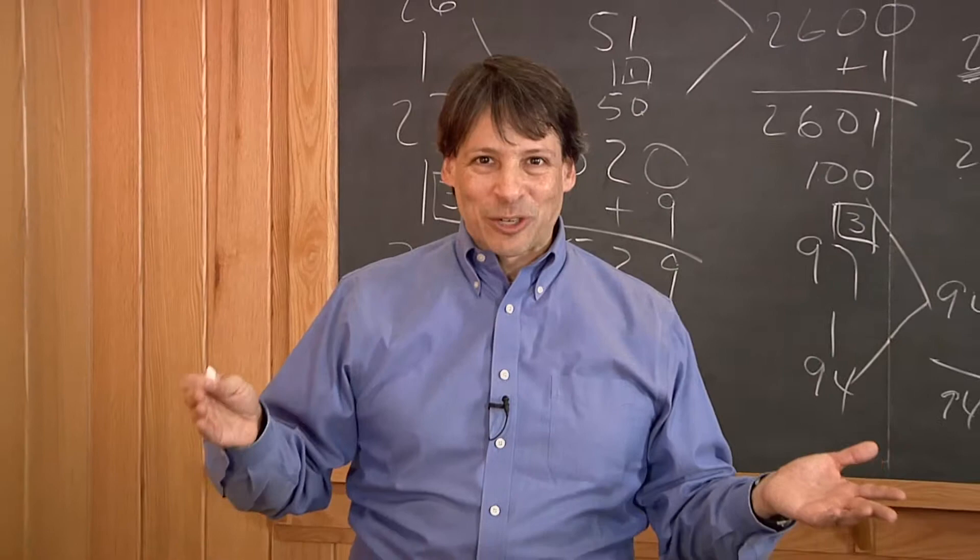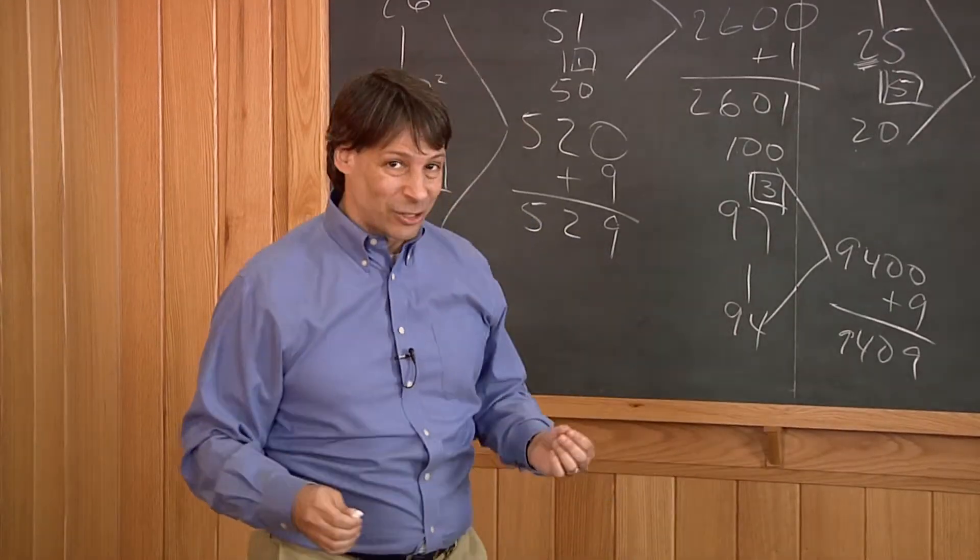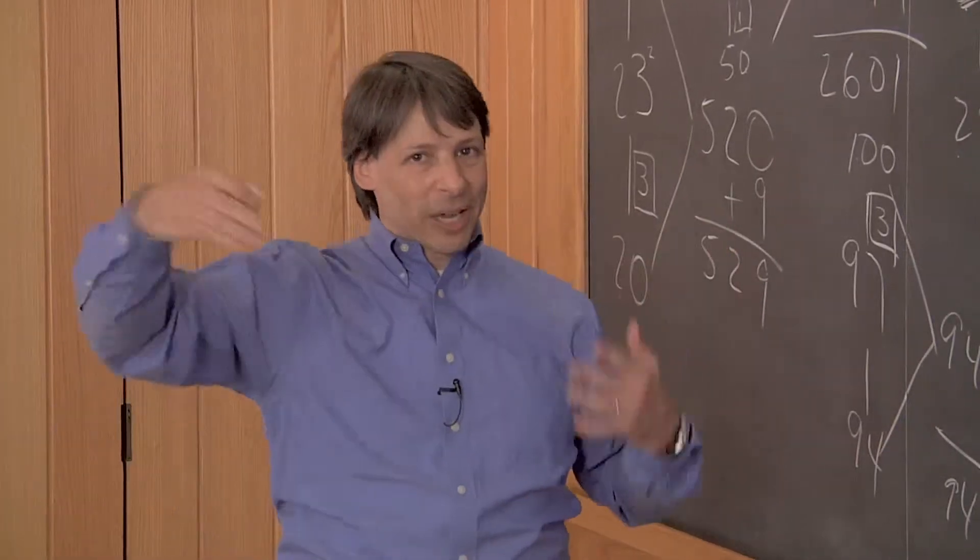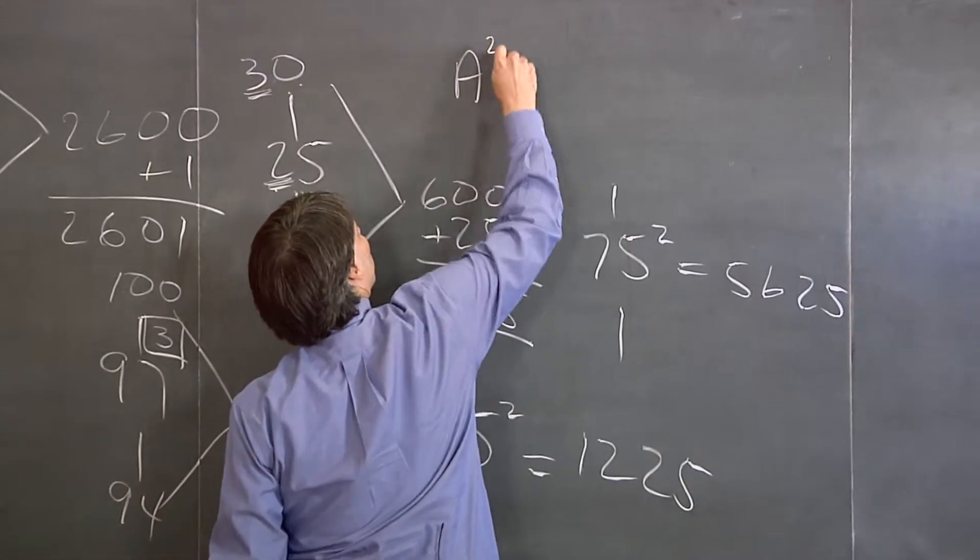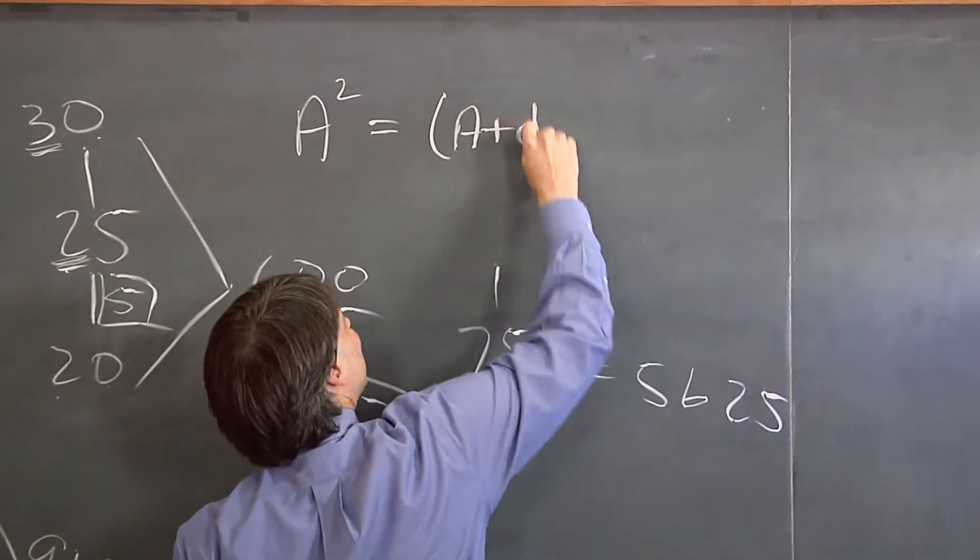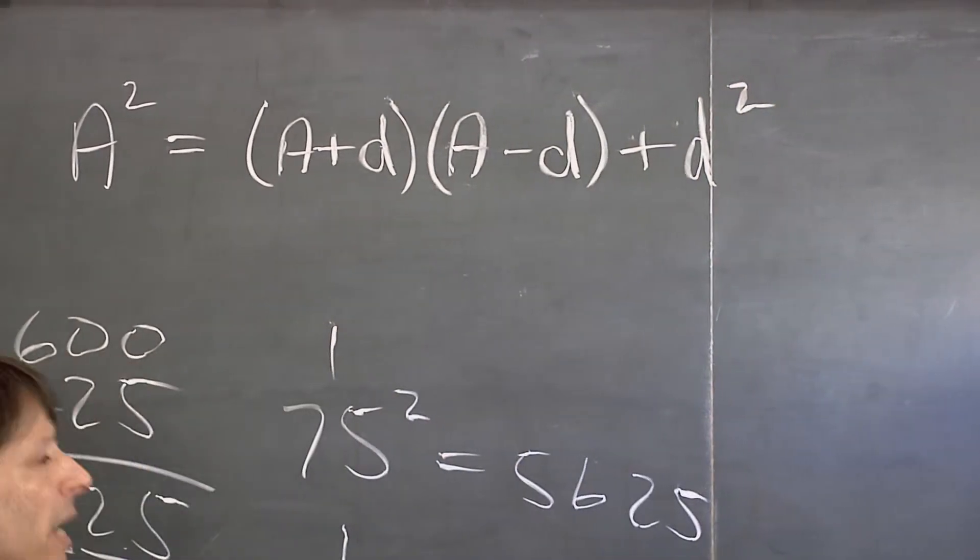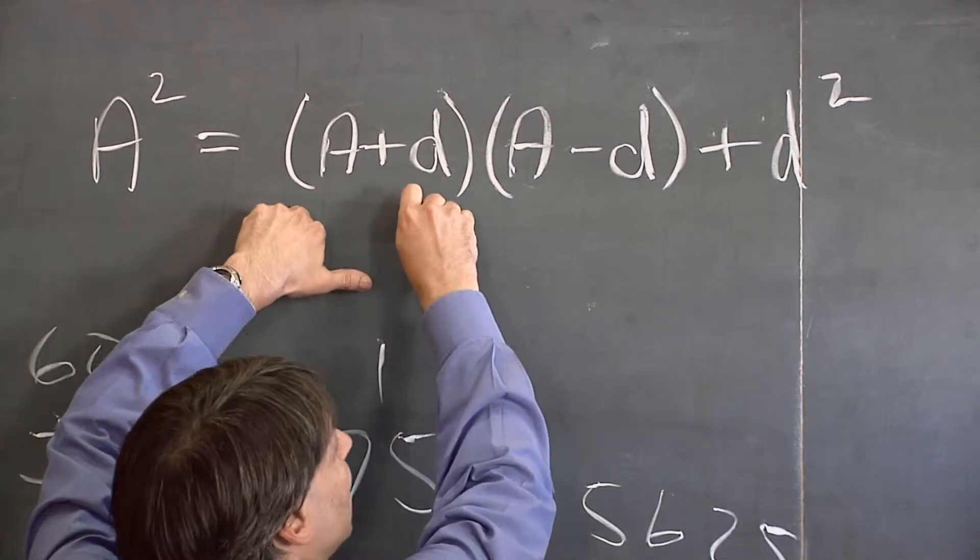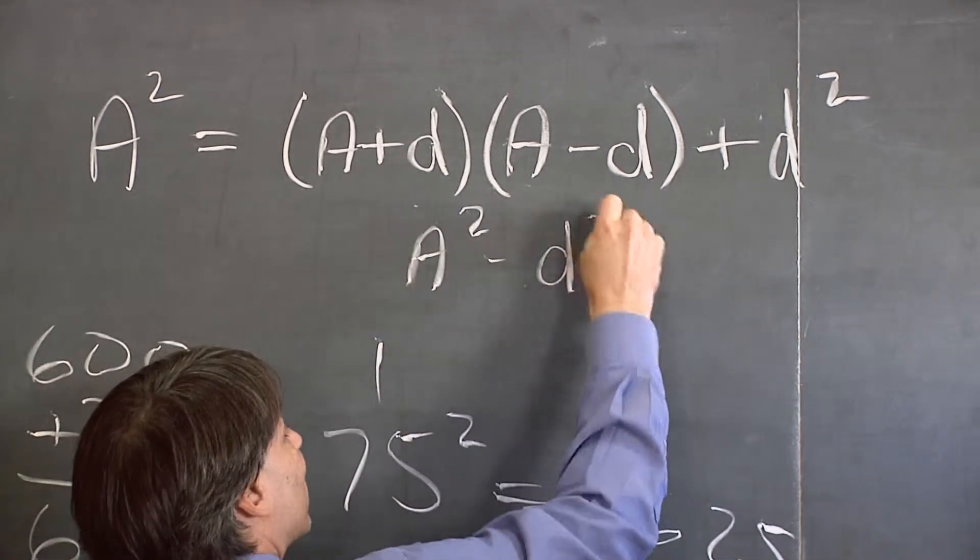Let me show you why this works. Here we are at the Mathematical Association of America, and we want to see reasons. Why do these shortcuts work the way they do? Here's the algebra that justifies the method that you've seen here. I don't think about this algebra as I'm doing the calculation, but it tells me that it's always going to work. Here's the formula. A squared equals A plus D times A minus D plus D squared.